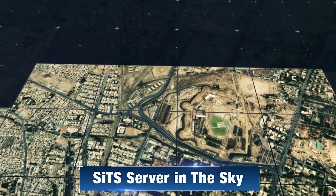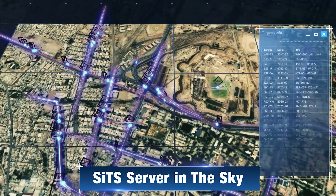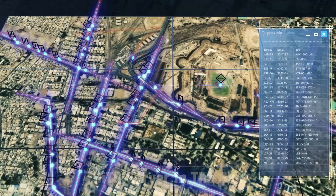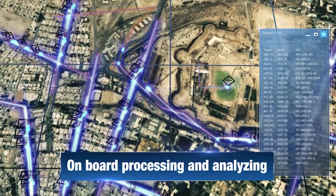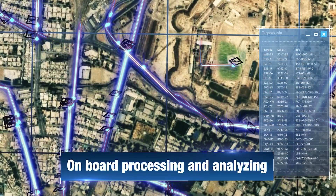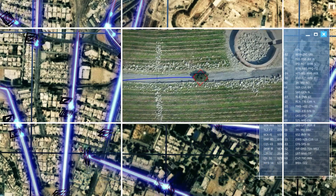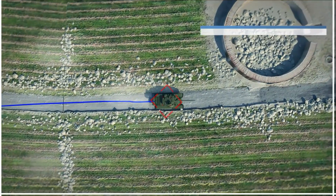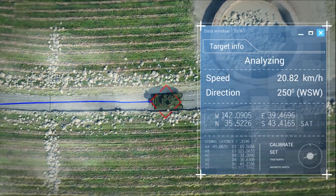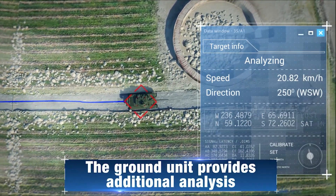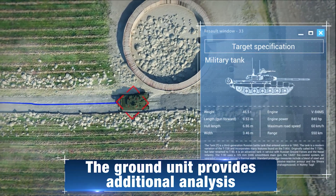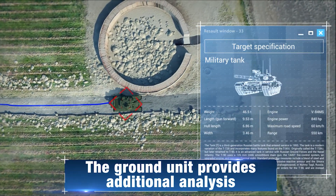The system uses SITS, Server in the Sky, combined with advanced smart algorithms which automatically map, track, and analyze each movement in the coverage area. The information is then sent to the ground unit for further analysis and precise distribution.